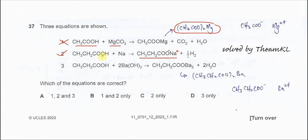For the third equation, propanoic acid with barium hydroxide - the formula here is wrong. It should be CH3CH2COO-2. It shouldn't be this one. This is wrong because barium is 2+ and this anion is negative, so therefore it should be this formula. So this one is wrong.